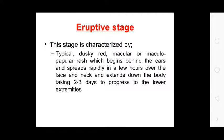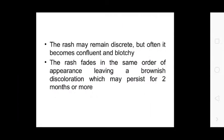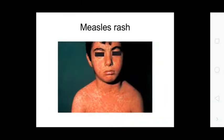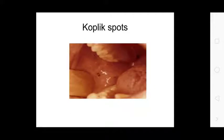Eruptive stage: characterized by a typically dusky red macular and maculopapular rash which begins behind the ears, spreads over the face and neck, then extends downward over the trunk, taking two to three days to progress to the lower extremities. The rash may remain discrete but often becomes confluent and blotchy. The rash fades in the same order of appearance, leaving a brownish discoloration which may persist for two months or more. Koplik spots are seen in the mucosa near the molar and premolar cavity.